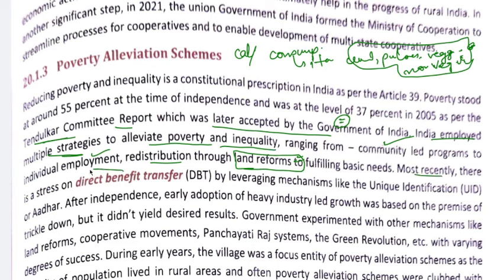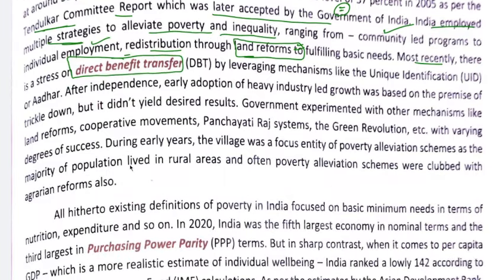Recently, the emphasis has been on Direct Benefit Transfer (DBT). In preliminary exams, DBT-related questions have appeared. Through DBT, money is directly transferred to beneficiaries' bank accounts. Previously, there were intermediaries and officials appointed to distribute funds, but with Aadhaar-linked bank account verification, money now goes directly to the account, solving issues of leakage.